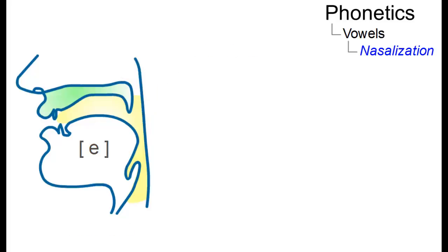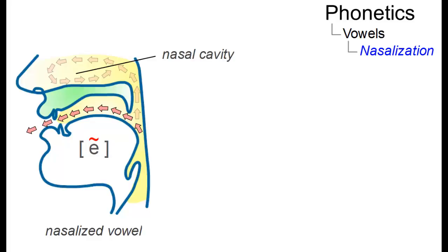However, if the velum is lowered to allow part of the airstream to fill the nasal cavity, vowels may be nasalized, and the nasal cavity is used as a second resonance chamber.